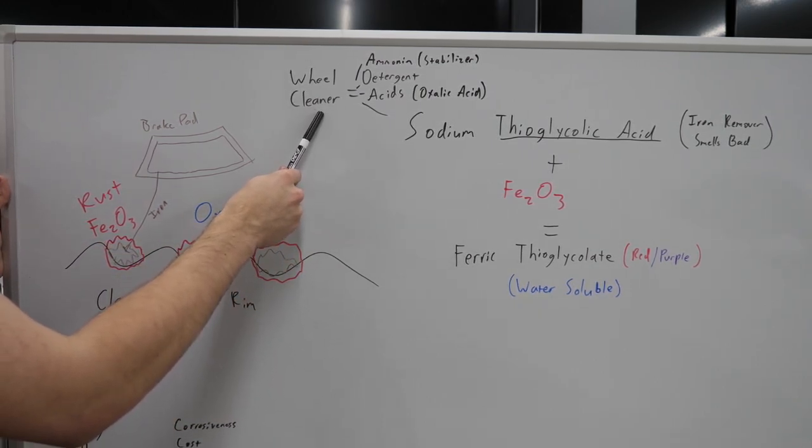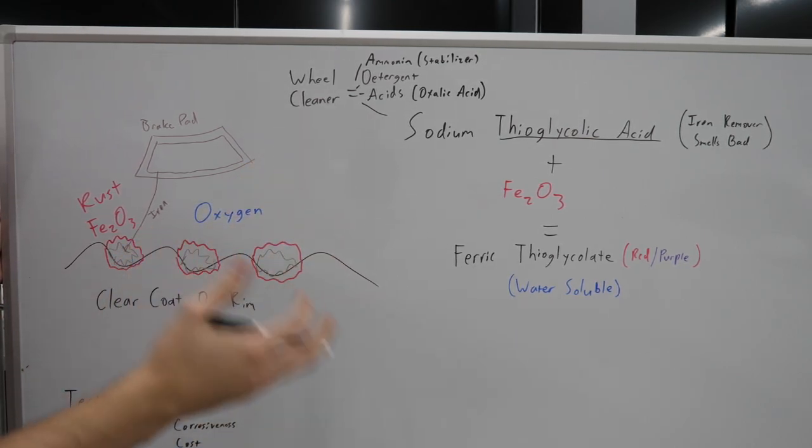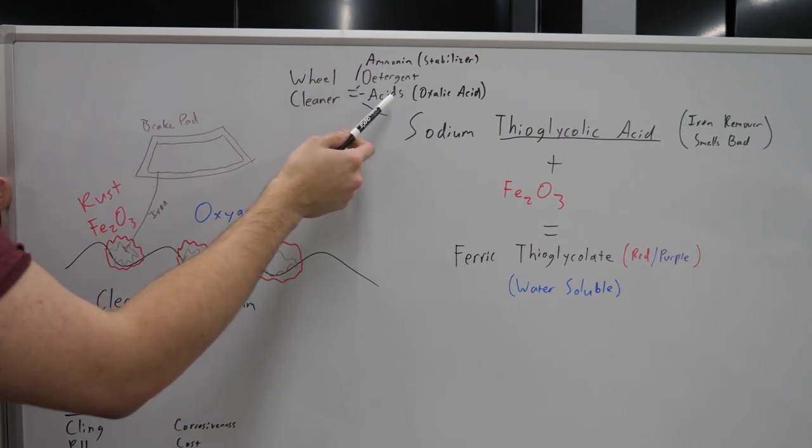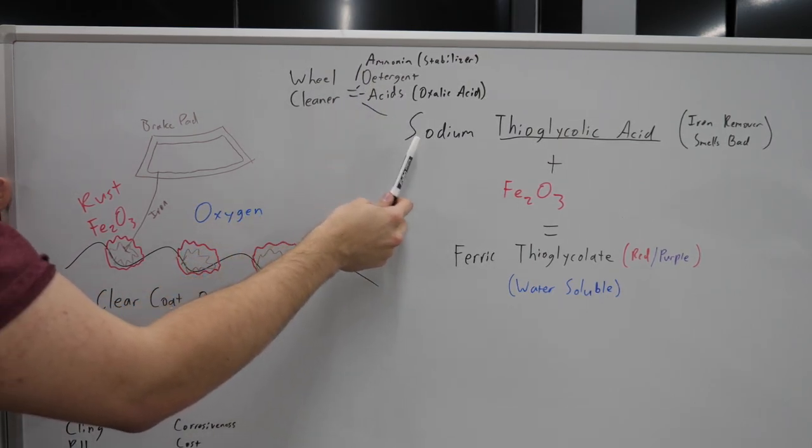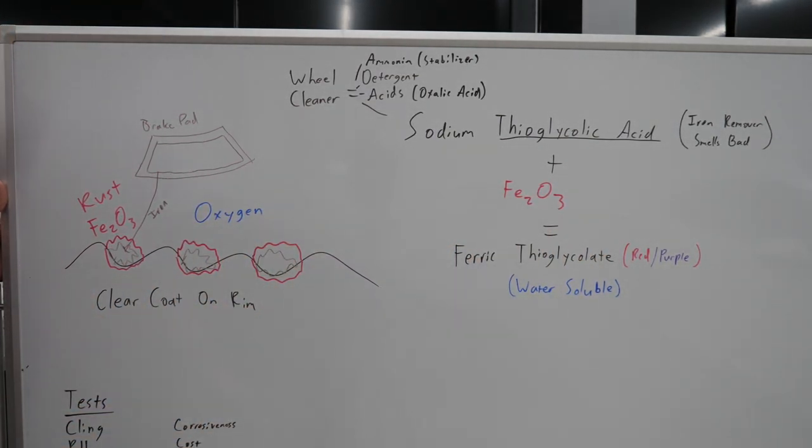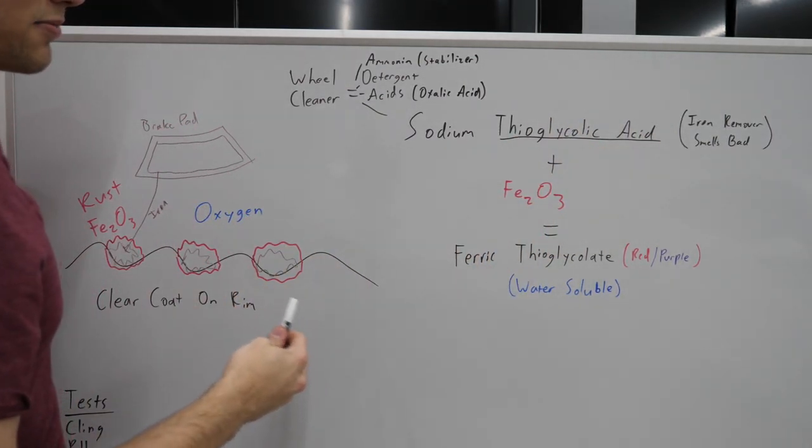So what do we need to actually go in and get rid of it? A wheel cleaner of some kind. So typically in a wheel cleaner, I'll say typical because this is not every single recipe. I've gotten as many MSDS as I possibly can to get my hands on and try and figure this out. But I'll say this is typical: ammonia, detergents, other cleaning acids, and thioglycolic acid in some form. Sodium seems to be the most common.